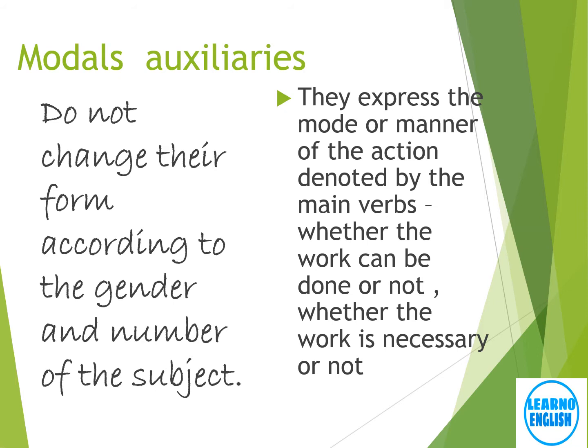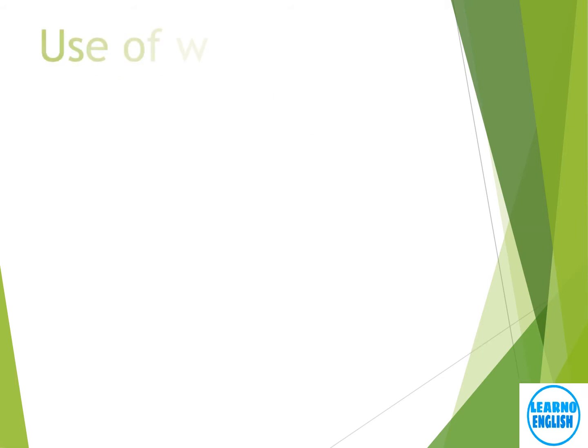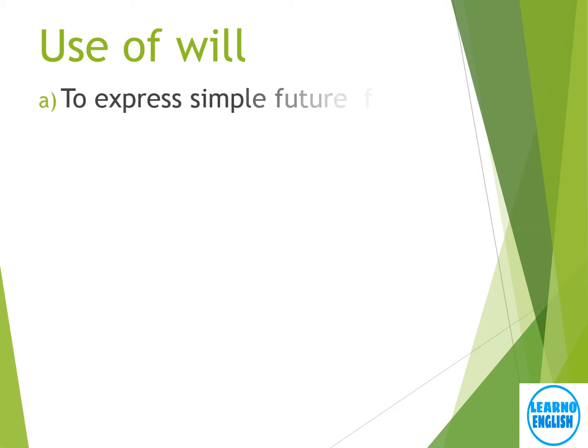यह modals जो हैं, यह बताते हैं कि हम लोगों का काम होगा कि नहीं होगा, होना जरूरी है कि नहीं है। आप लोग एक-एक कर सभी modals के use को देखेंगे। सबसे पहले हम लोग 'will' को देखते हैं। Will का प्रयोग हम लोग simple future tense में, खासकर second person और third person में करते हैं।